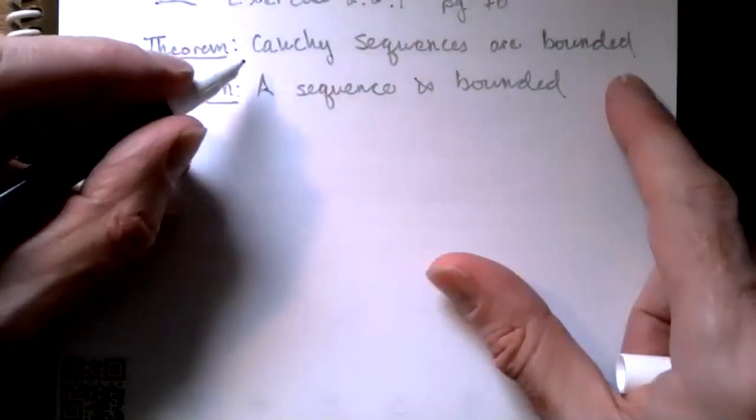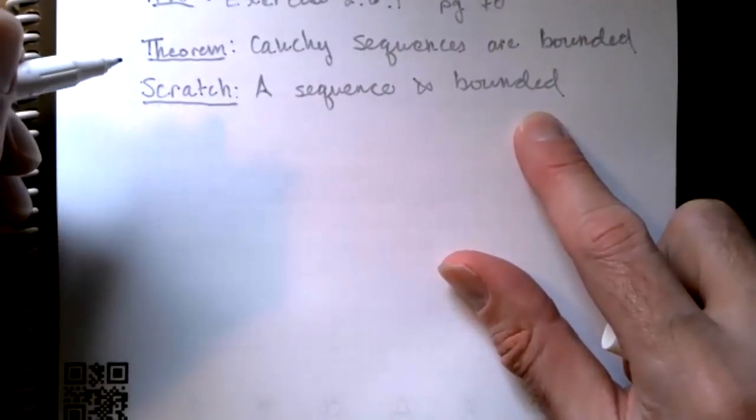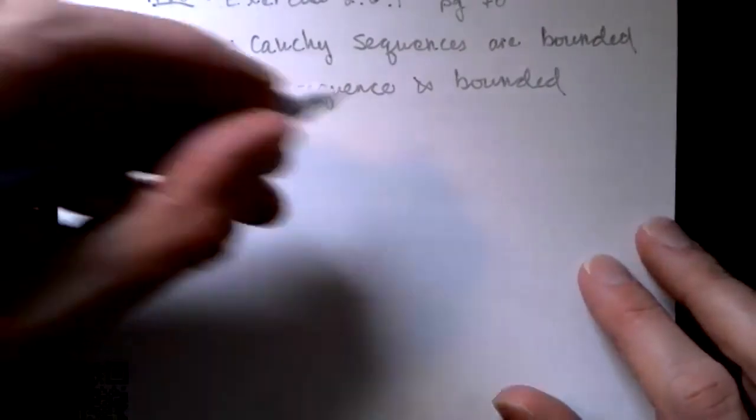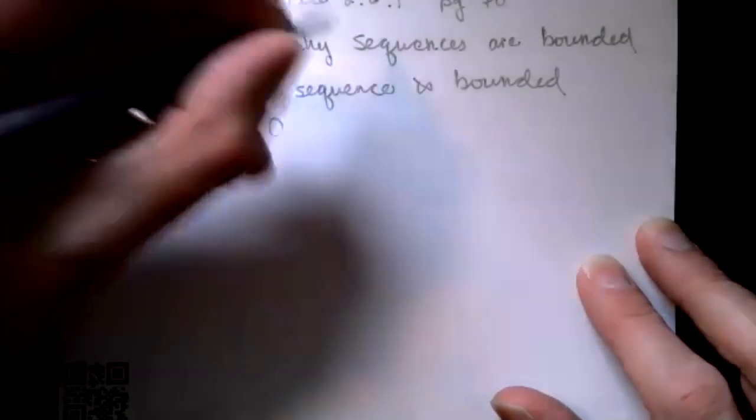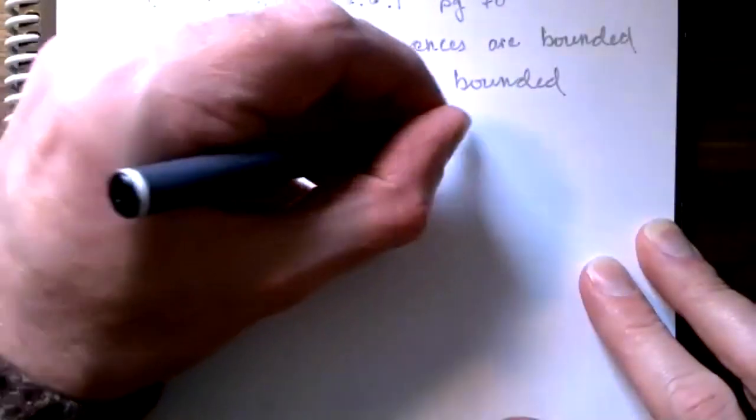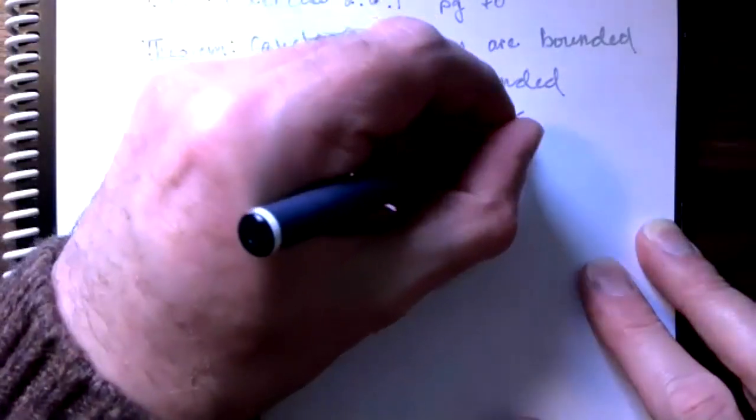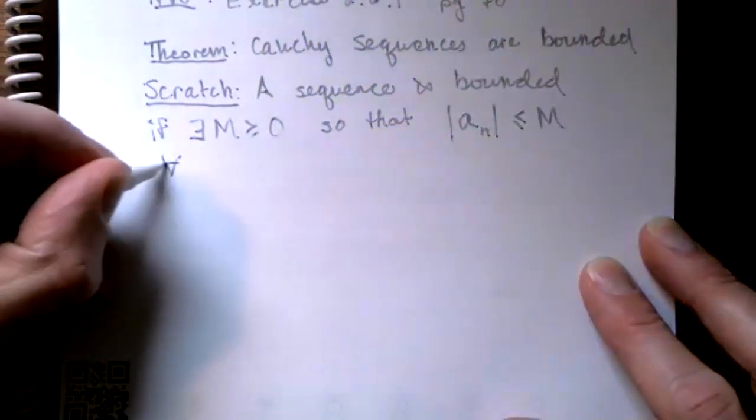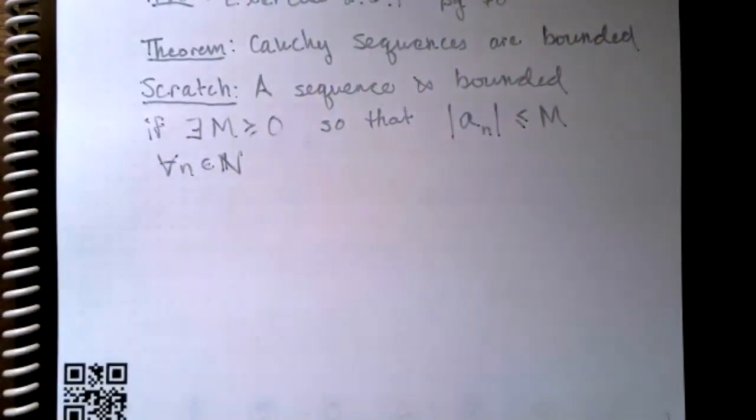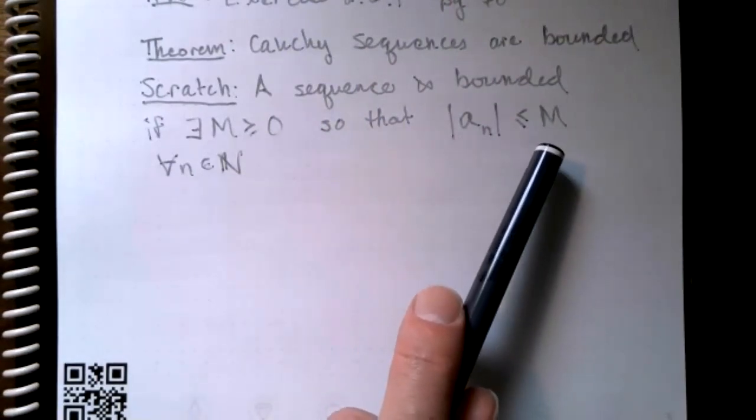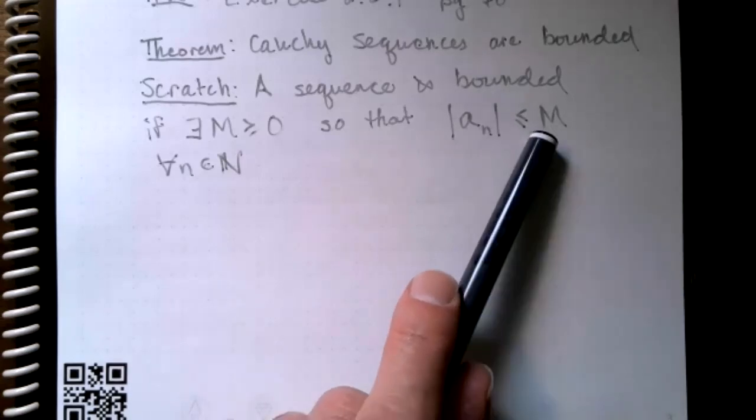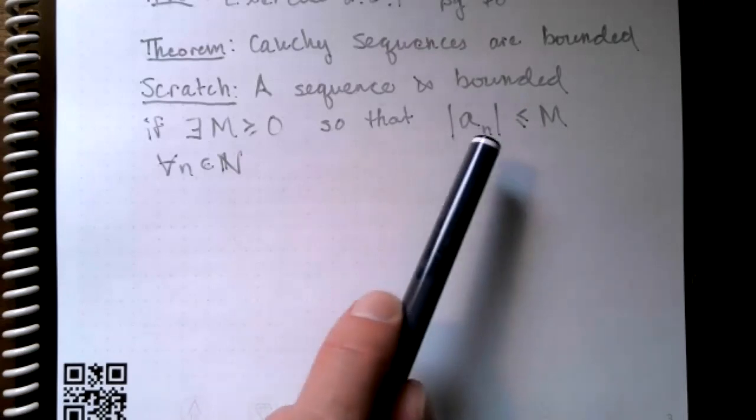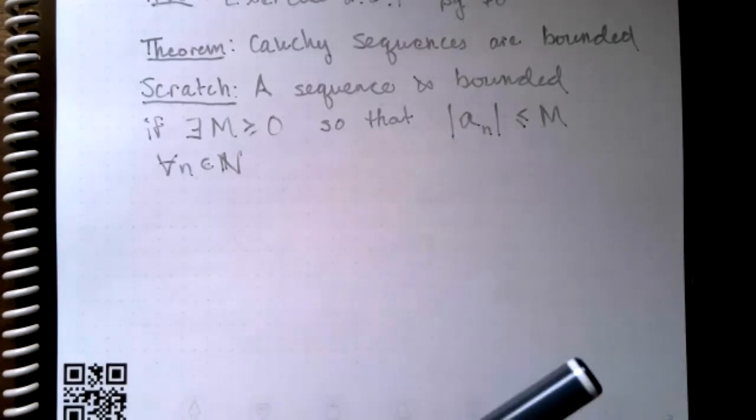Now remember, if we're trying to prove something is bounded, we need to have the precise definition of what it means for a sequence to be bounded in our working memory here. So a sequence is bounded if there exists big M greater than or equal to zero, so that absolute value of a sub n is less than or equal to big M for all natural numbers, little n. So if we are to show that a sequence is bounded, we have to produce the capital M that exceeds every term in the sequence. If you're telling me a sequence is bounded, you got to show me the bound.